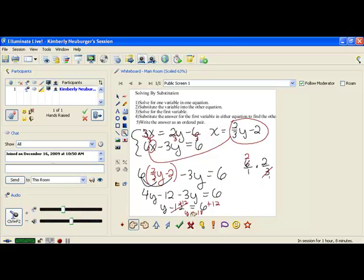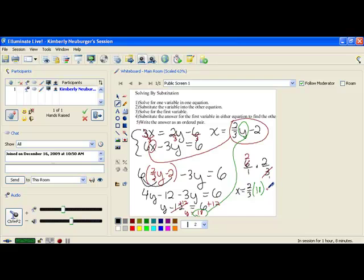So if I replace this y with this 18, then I will know what x is as soon as I calculate this side of the equation. So let's plug it in there because that will make it easiest. I'm going to put this 18 right in here. And that gives me x equals 2 thirds times 18 minus 2.